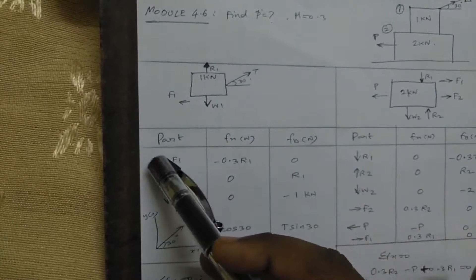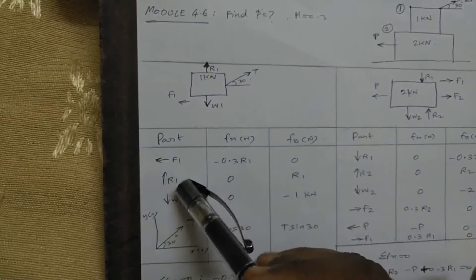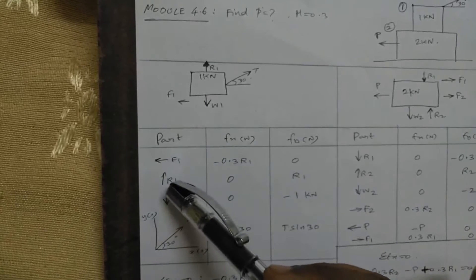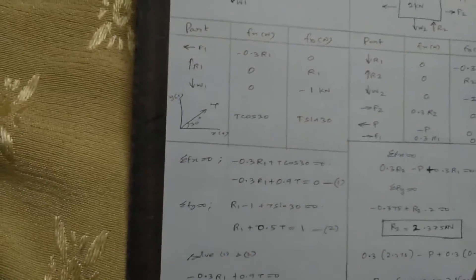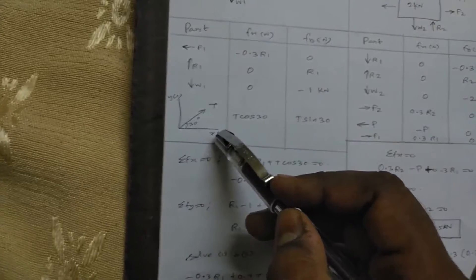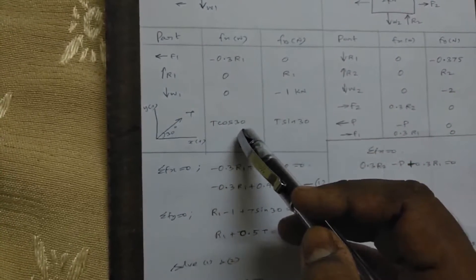Regarding the free body diagram: friction F1 equals minus 0.3 R1. R1 is going upwards, W is going downwards at minus 1 kN. Regarding the value of T, it is acting at 30 degrees, so the x-component is T cos 30 and the y-component is T sin 30.